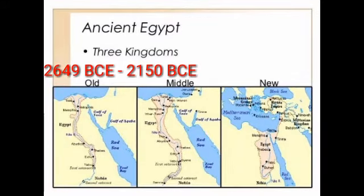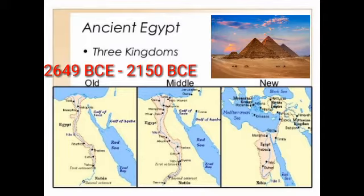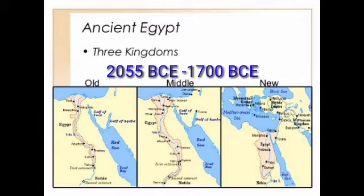The Old Kingdom: This period extended roughly from 2649 BCE to 2150 BCE. Some historians refer to this period as the Age of Pyramids.